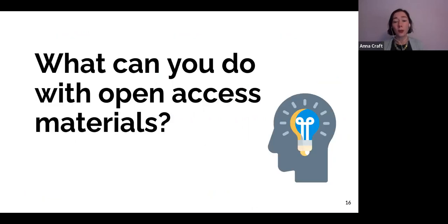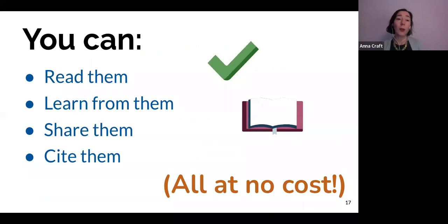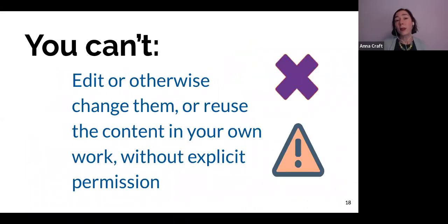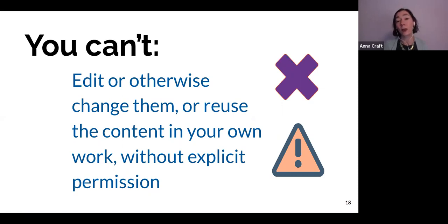Open access is a publishing model and also a method of sharing published scholarship. When materials are published or shared through open access, they're made available online and accessible to readers at no cost and without sign-ins or other barriers — so anyone can access that content for free. These materials can be read, learned from, shared, and cited at no cost, but they're not licensed for editing or reuse in different ways without explicit permission.